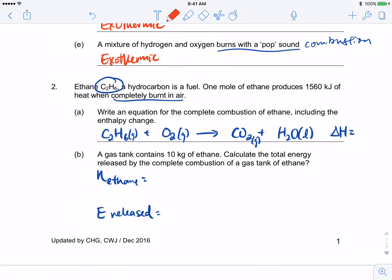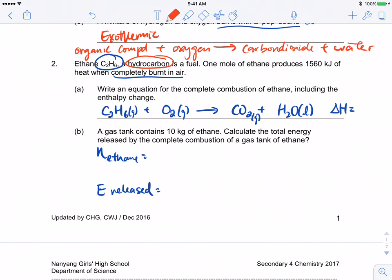Next we have ethane. When it combusts in air, what is the equation? This is the standard equation for any hydrocarbon, any organic compound when we burn it. The organic compound plus oxygen gives us carbon dioxide and water. You just need to balance the equation. I've written the products here but it's not balanced yet.